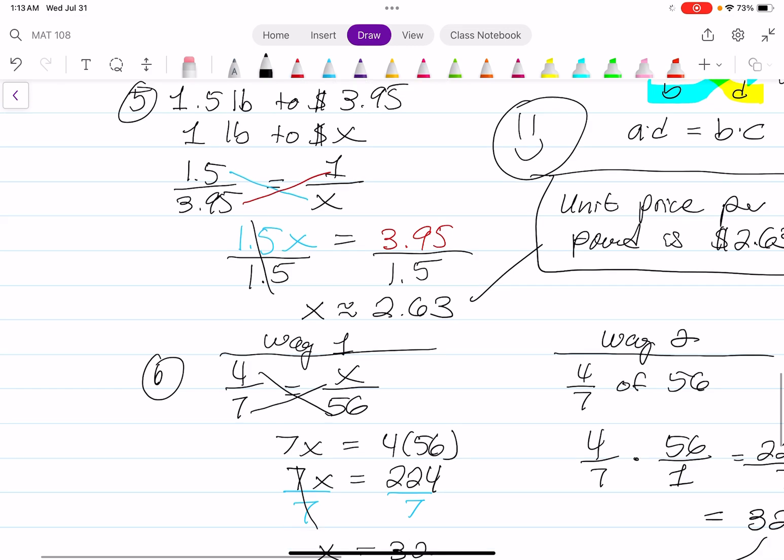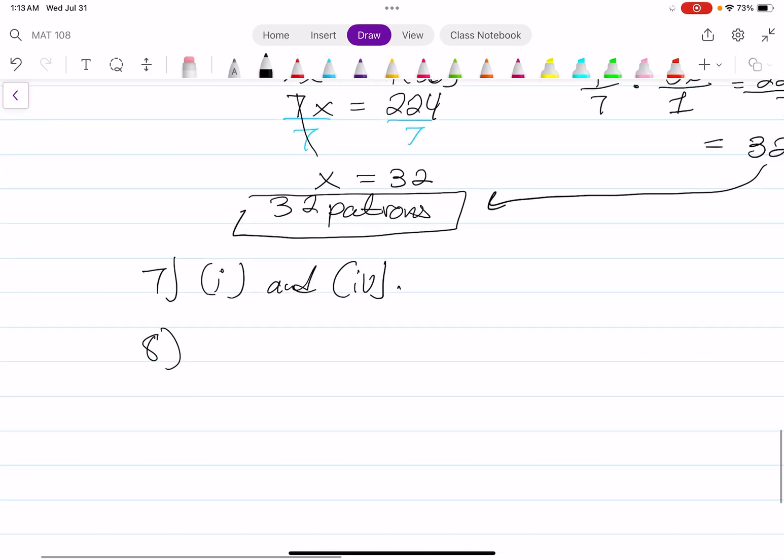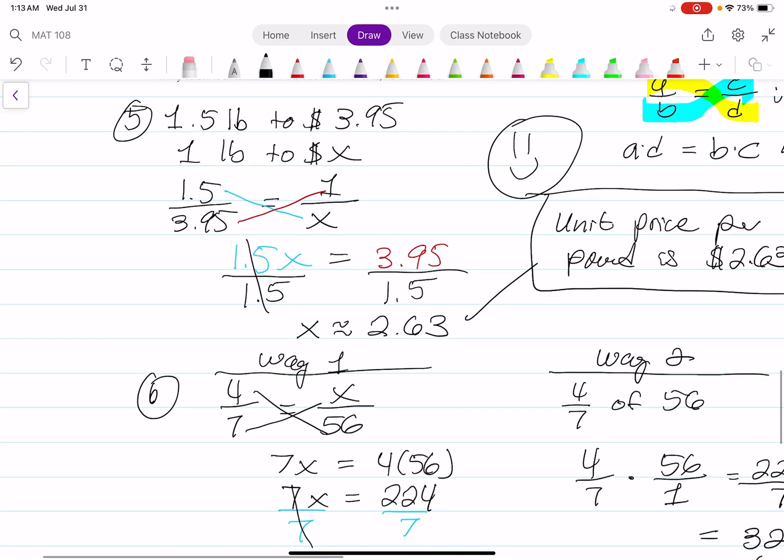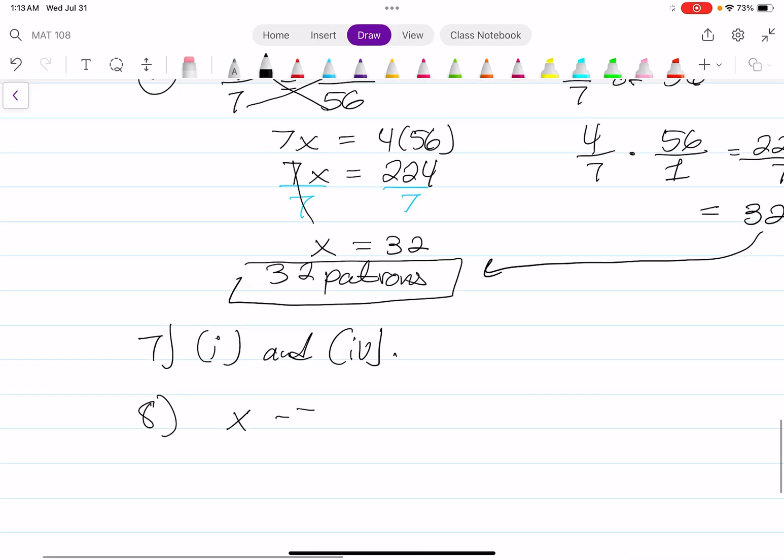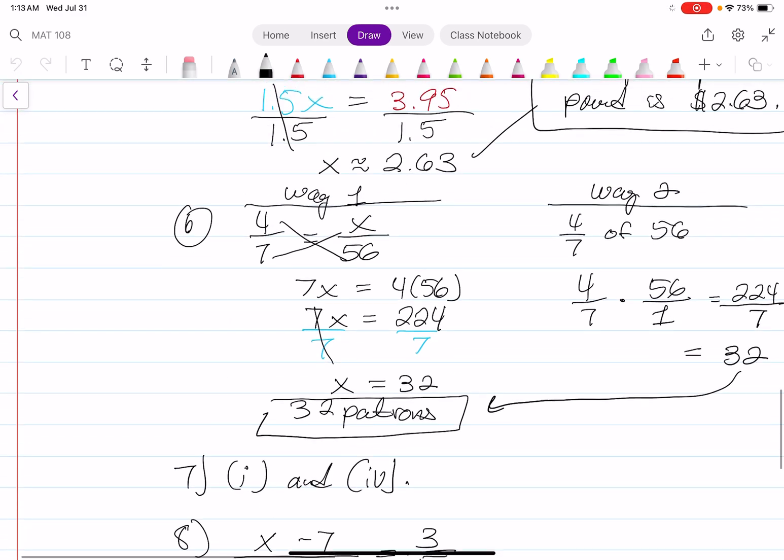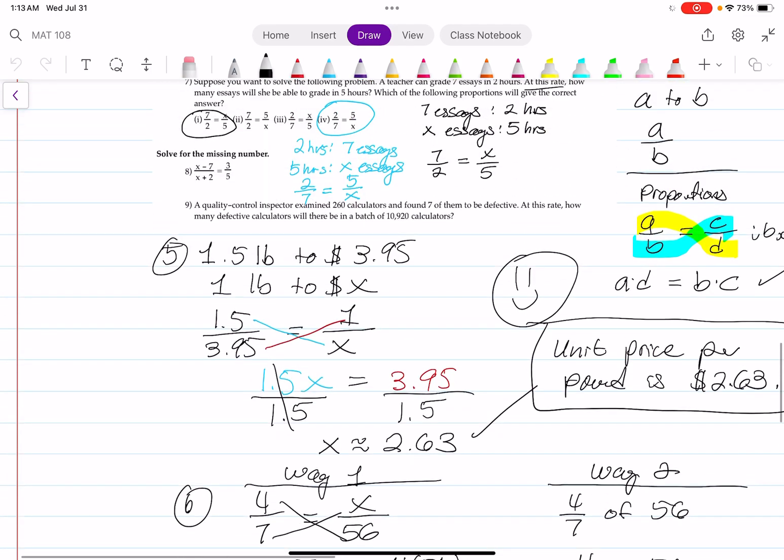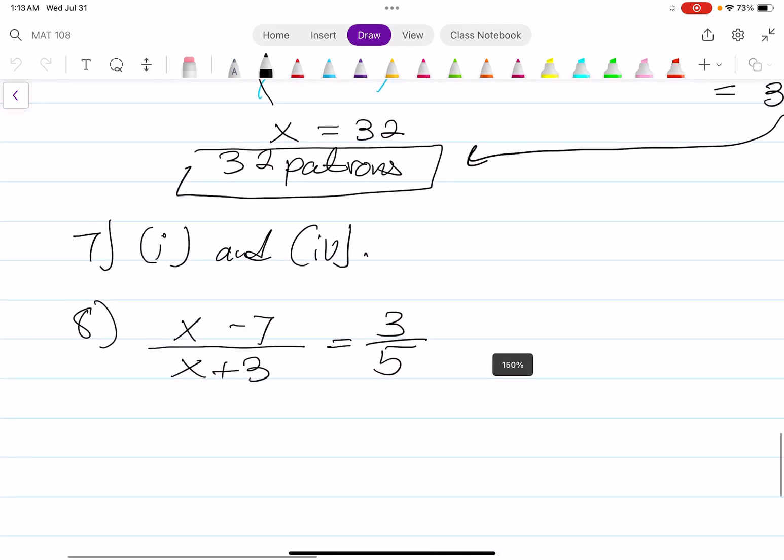Number 8. Eight is X minus 7 over X plus 2 equals three-fifths. Once again, these are two ratios that are equal to each other. That is a set of proportions. We're going to cross multiply. But we're going to be safe. Before we cross multiply, let's put each of these binomials in parentheses because it is considered one quantity.